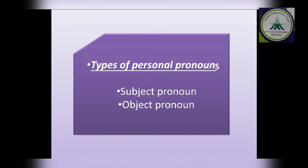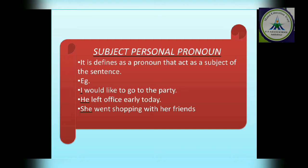Up to now we have studied personal pronouns only. But now we will differentiate that personal pronouns are of two types: subject pronoun and object pronoun. A subject pronoun is defined as a pronoun that acts as the subject of the sentence. For example, 'I would like to go to the party' — here 'I' is the subject and also a pronoun, so it becomes a subject personal pronoun.